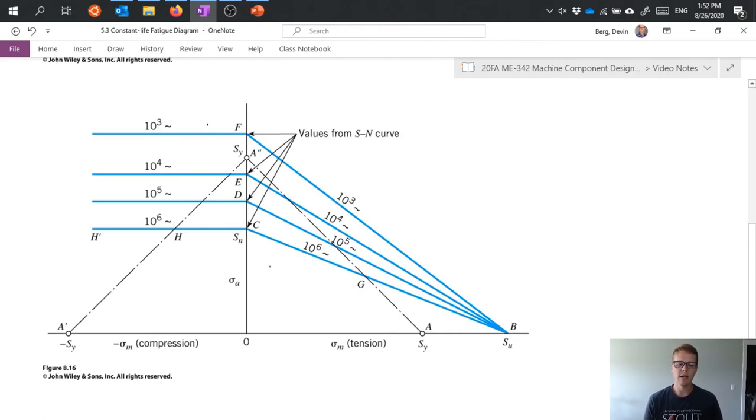And the reason for that is that we can't exceed the yield strength. Yield generally comes from static loading, but if we exceed the yield strength we're still going to yield even if we have this cyclic dynamic loading. So we still have to keep that in the back of our mind.